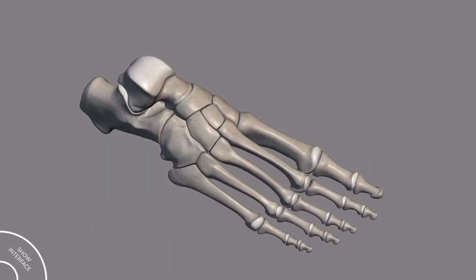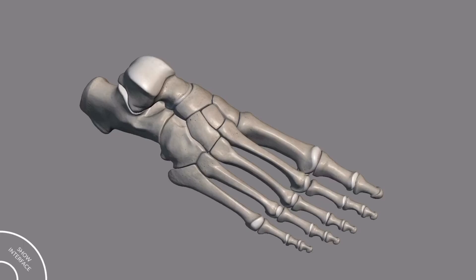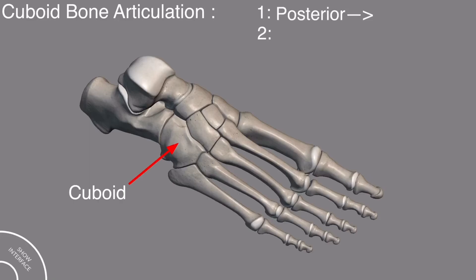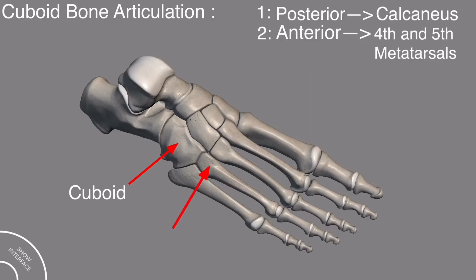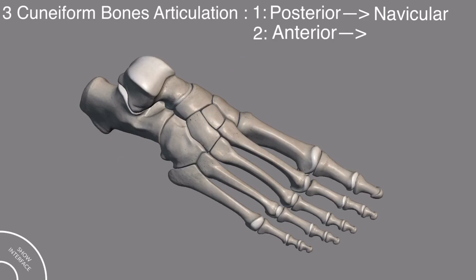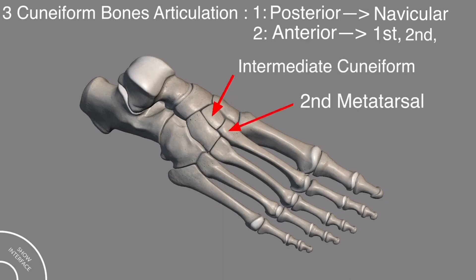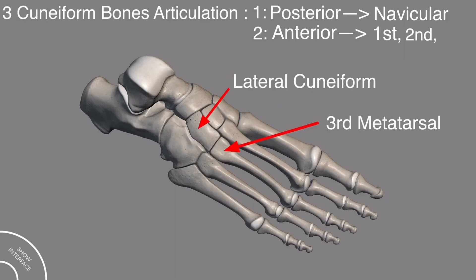The navicular bone also has two articulations: posteriorly it articulates with the talus bone, and anteriorly it articulates with the three cuneiform bones. Similarly, the cuboid bone has two articulations: posteriorly it articulates with the calcaneus bone, and anteriorly it articulates with the fourth and fifth metatarsal bones. The three cuneiform bones also have two articulations — posteriorly all three articulate with the navicular bone, and anteriorly the medial cuneiform articulates with the first metatarsal, the intermediate with the second, and the lateral cuneiform with the third metatarsal.